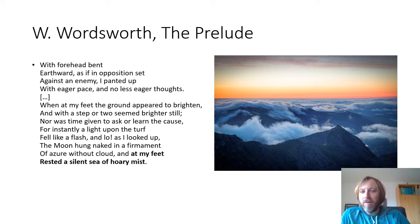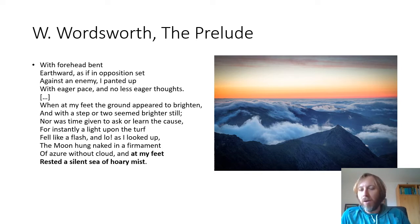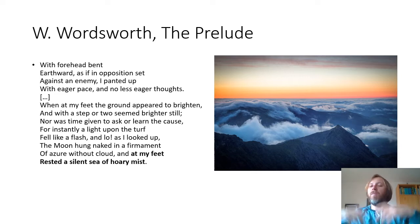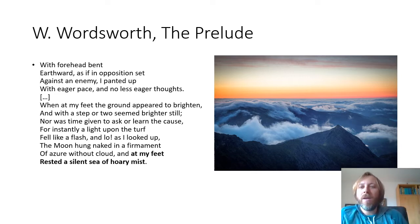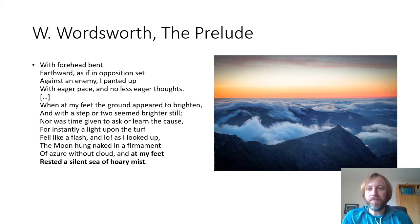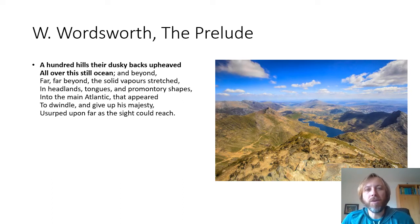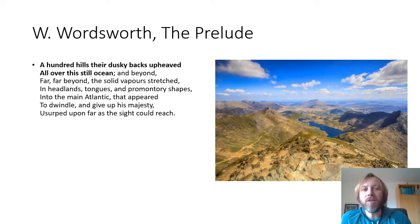What has happened is that as they move up, they come to the top of the fog, the top of the cloud, and move out above it. Then the moon becomes visible and shines down on this sea of mist. Wordsworth goes on to describe the scene: 'A hundred hills their dusky beaks upheaved all over this still ocean' — this is the fog — 'and beyond, far, far beyond, the solid vapors stretched in headlands, tongues, and promontory shapes into the main Atlantic, that appeared to dwindle and give up his majesty, usurped upon far as the sight could reach.'